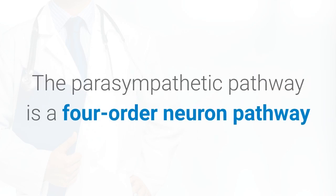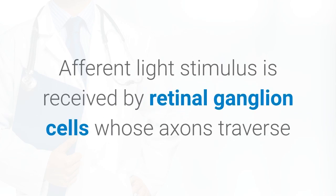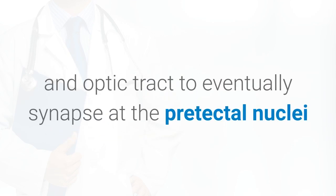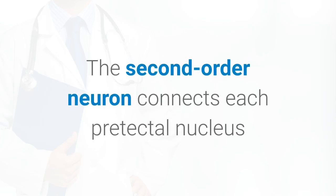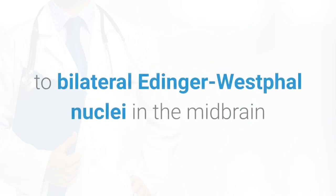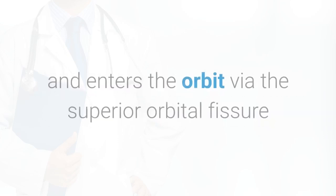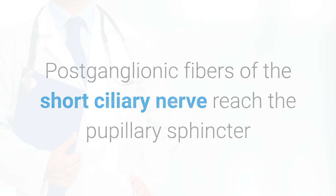The parasympathetic pathway is a four-order neuron pathway that controls pupillary constriction and accommodation. Afferent light stimulus is received by retinal ganglion cells whose axons traverse the optic nerve, optic chiasm, and optic tract to synapse at the pretectal nuclei of the dorsal midbrain at the level of the superior colliculi. The second-order neuron connects each pretectal nucleus to bilateral Edinger-Westphal nuclei, allowing for the consensual light reflex. The Edinger-Westphal nucleus supplies parasympathetic fibers to the third cranial nerve, which traverses the cavernous sinus and enters the orbit via the superior orbital fissure to synapse at the ipsilateral ciliary ganglion. Postganglionic fibers of the short ciliary nerve reach the pupillary sphincter and ciliary muscles.